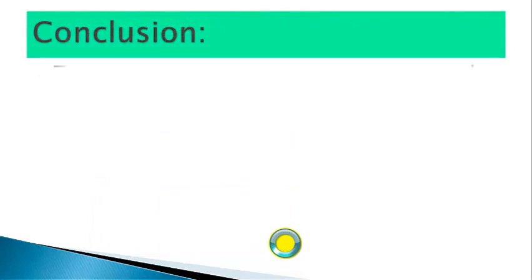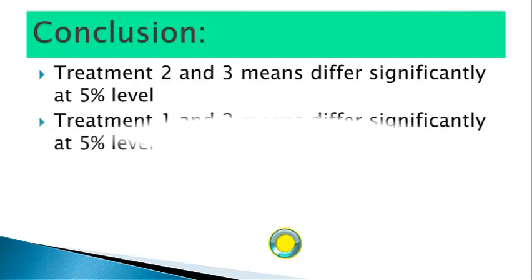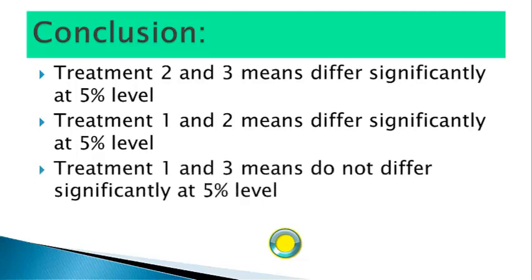Conclusion: Treatment 2 and treatment 3 means differ significantly at the 5% level, since the observed range between these two treatment means is greater than the least significant range. Also, treatment 1 and treatment 2 means differ significantly at the 5% level, since the observed range is also greater than the least significant range. But treatment 1 and treatment 3 means do not differ significantly at the 5% level, since the observed range is less than the least significant range.